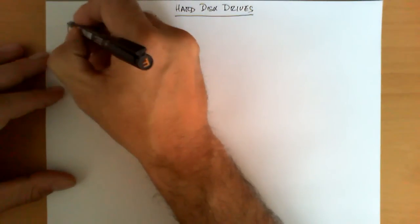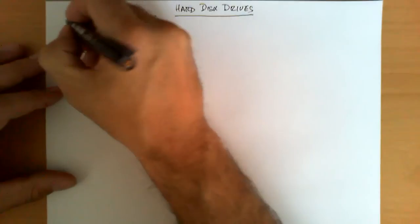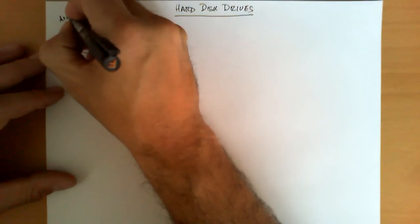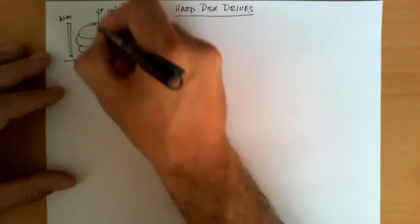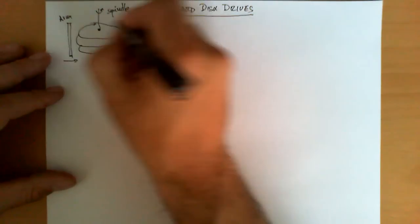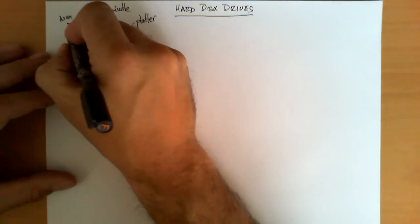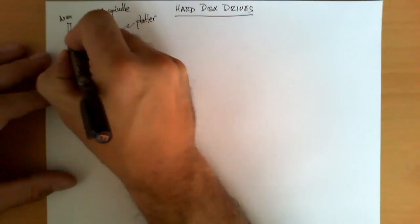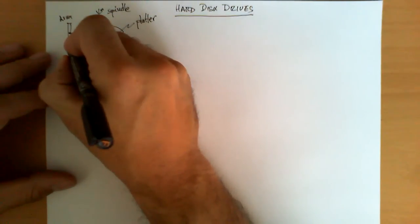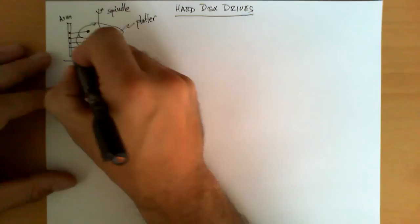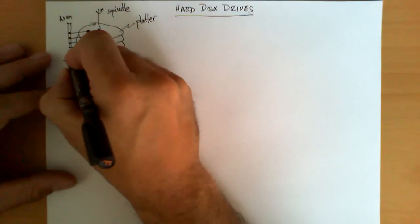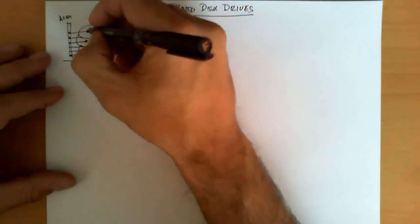Then the important mechanism to read and write this platter is an arm which is capable of going towards the center and towards the edge of these disks, and this arm is holding what we call the read-write heads, typically one on each surface.